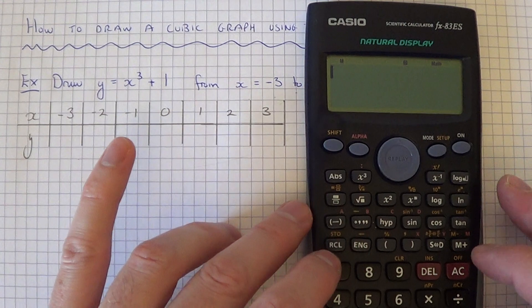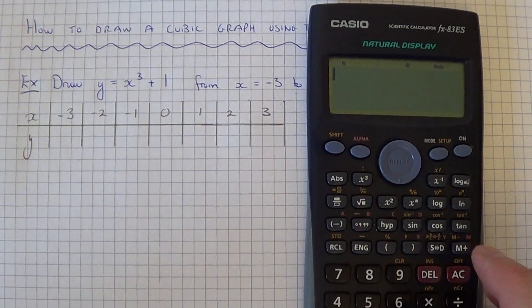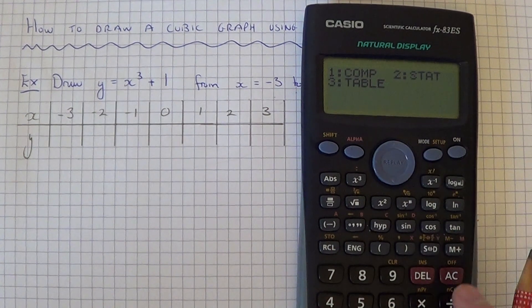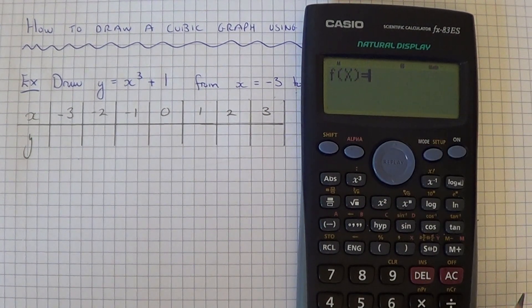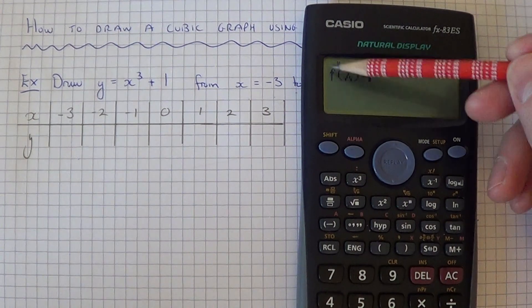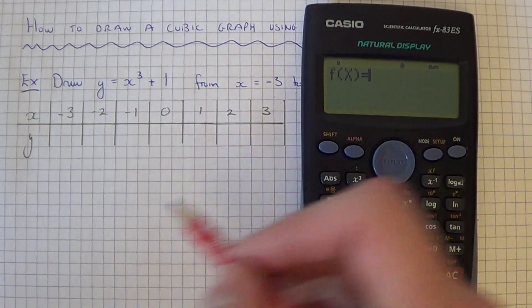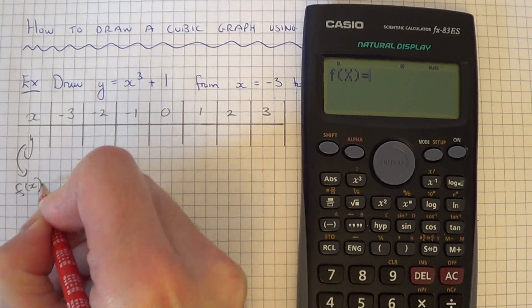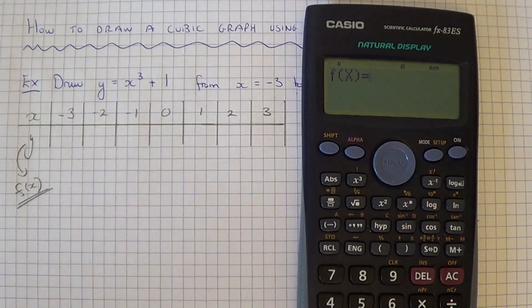To get the Table of Values up on your calculator, just press the Mode key and press 3 for Table, and you'll see this f of x come up here. Now f of x is the same as y, so f of x is our y-coordinates.